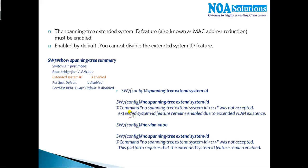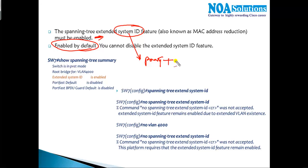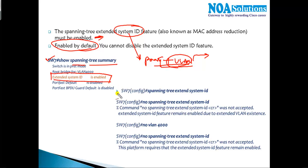The other condition for extended VLAN support is that the spanning tree extended system ID feature must be enabled — by default it is enabled. The extended system ID is a combination of the priority value plus the VLAN information, used when spanning tree selects the root bridge. You can verify this with the show spanning-tree summary command, which shows 'Extended system ID is enabled.' Trying to disable it with 'no spanning-tree extended-system-id' shows it cannot be disabled.